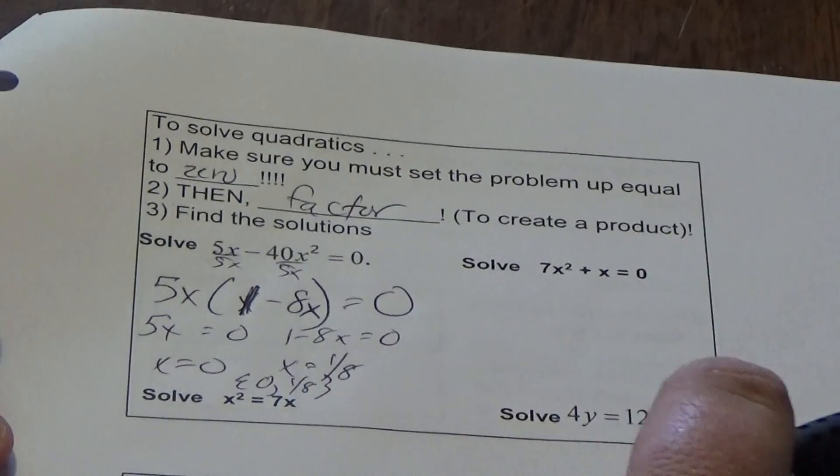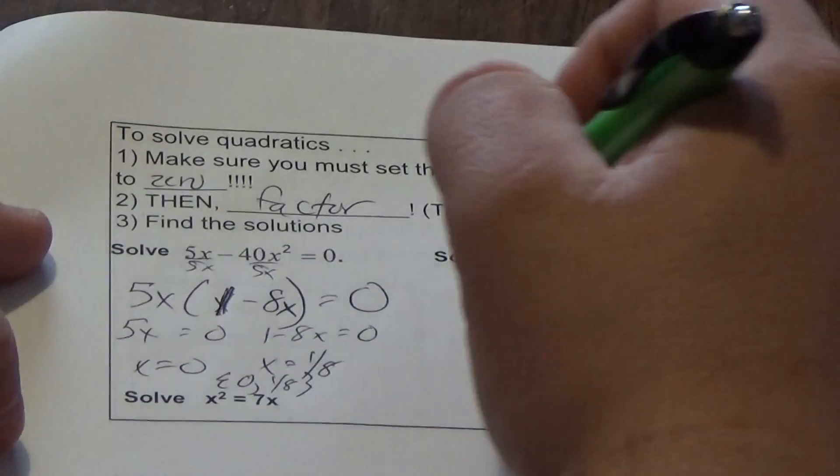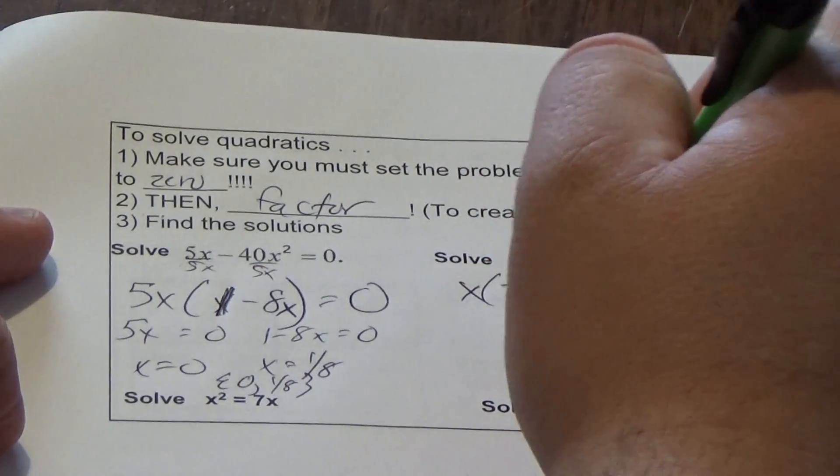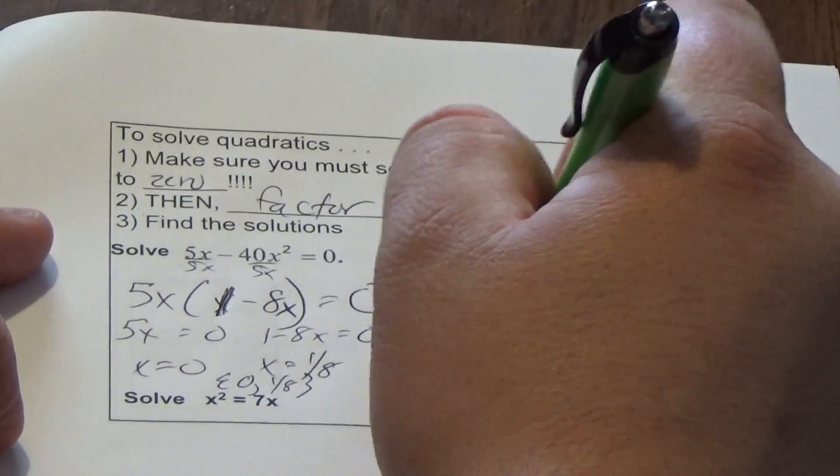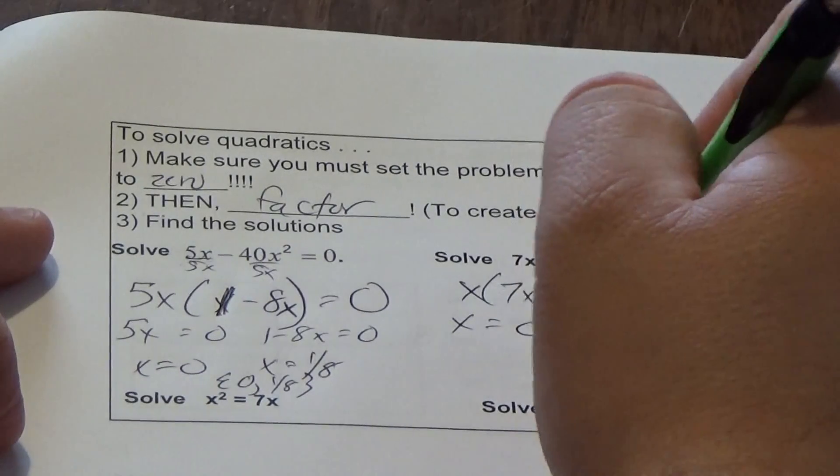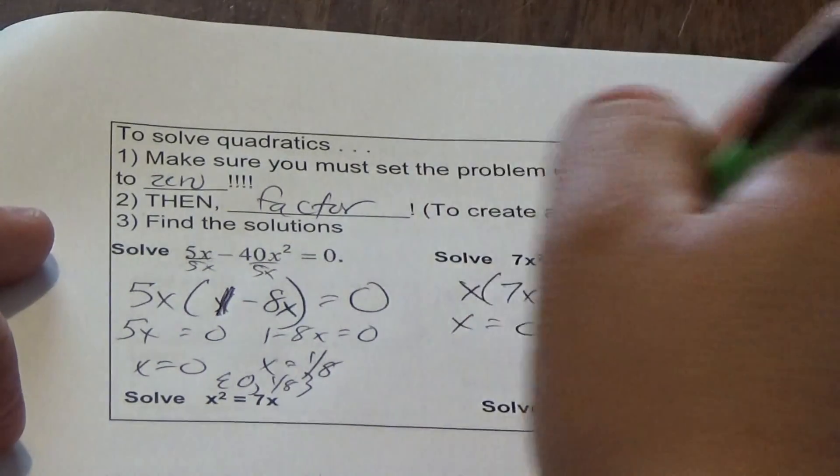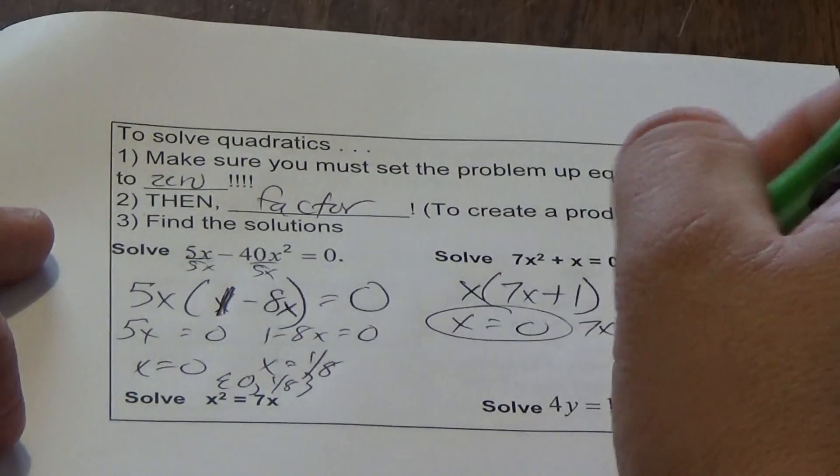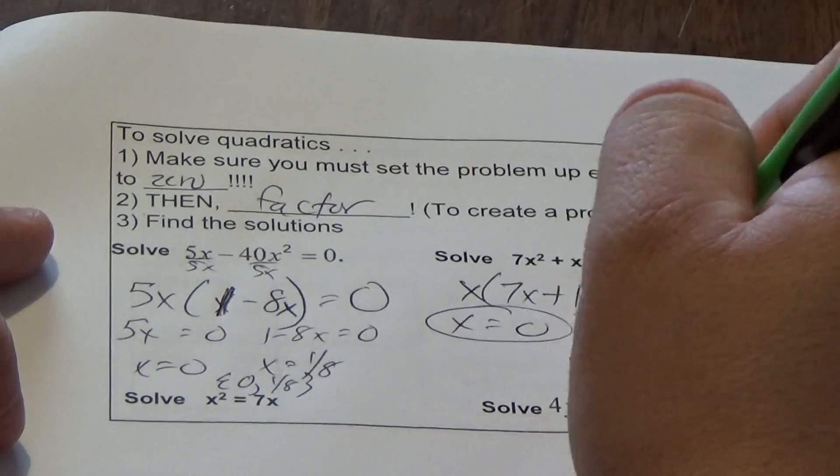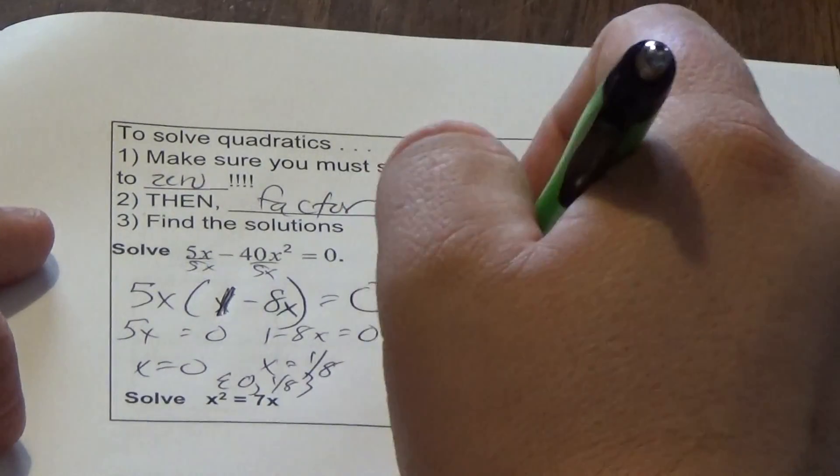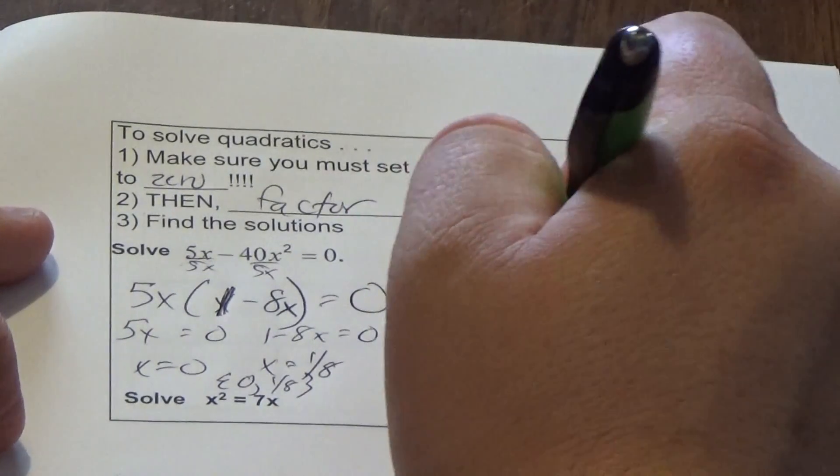In this one, the greatest common factor is x. Set both sides equal to 0. This one is already done. Subtract 1, divide by 7, x equals negative 1/7. So {-1/7, 0}.